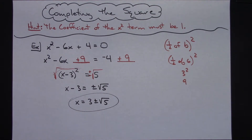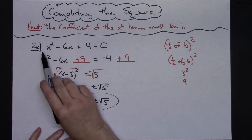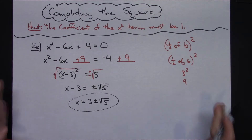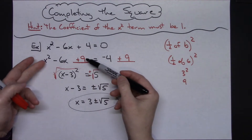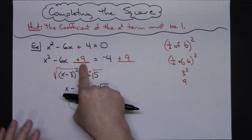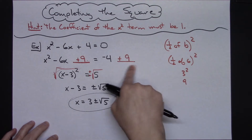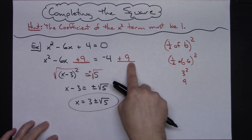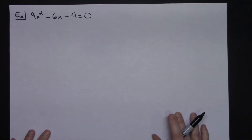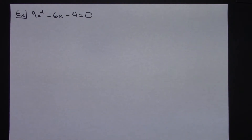That's a straightforward example of completing the square when the leading coefficient is 1. The basic setup is always the same: create a perfect square trinomial, and whatever you add to the left you also add to the right. Now for a second example — this time we have a coefficient that is not 1; I've got a 9 coefficient instead.